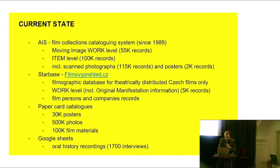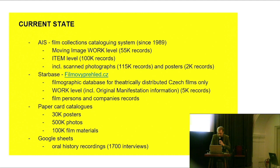These are the systems we intend to replace with our new cataloging system. The first are film cataloging softwares. ICE is a very old cataloging software, programmed in COBOL and which is still running. We also have a huge paper card catalogs for posters and photos with basic evidence, and also for film materials on the item level, which has more detailed information. We also use Google Sheets for oral history recordings.